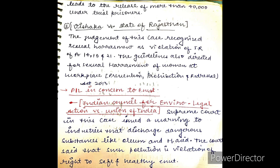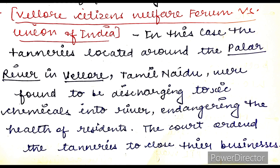PIL in the context of environment — कुछ cases discuss करते हैं। First, Indian Council for Environment Legal Action vs. Union of India — इसमें Supreme Court ने कुछ ऐसी industries को जो बहुत dangerous oleum gas और H-acid type के chemicals release कर रही थीं, warning issue करते हुए कहा कि आप यह नहीं कर सकते, because it is a violation of the right to a safe and healthy environment। Second case, Vellore Citizens Welfare Forum vs. Union of India — इस case में बहुत सारी tanneries थीं located on the Palar river in Vellore, Tamil Nadu, और वो बहुत ज़्यादा toxic chemicals release कर रहे थे river में। Court ने held किया कि यह toxic chemicals residents की health को affect कर रहे हैं, और order दिया कि tanneries को बंद कर दिया जाए, क्योंकि fundamental rights का violation हो रहा है।